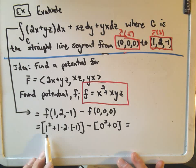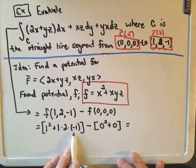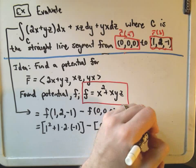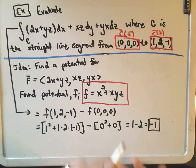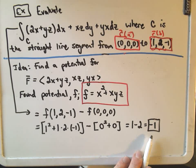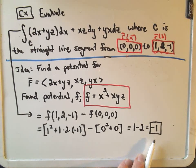And if we evaluate this, we get 1 squared, which is 1. 1 times 2 times negative 1 is negative 2. So we'll get 1 minus 2, or negative 1, which is the value we found by actually finding a parameterization and using the definition, and using a rather, I think, a longer, more complicated process.